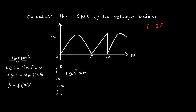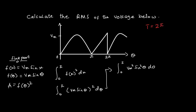Expanding, this gives us the integral from 0 to π of Vm²·sin²(θ) dθ. Now I am going to use the trig identity for sin²(θ), which is (1 − cos(2θ)) / 2. Substituting this in place of sin²(θ), we get the integral from 0 to π of Vm² multiplied by (1 − cos(2θ)) / 2 dθ.